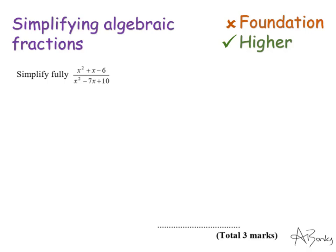So here's a simple example. It's simplified fully and it gives you an algebraic fraction. The way we're going to do this is we're going to factorise the top of the fraction, the numerator, and we're going to factorise the denominator. Now with this question, neither the numerator nor denominator looks easier or harder than the other. I normally do the easiest one first.